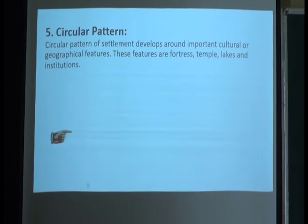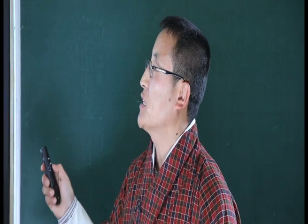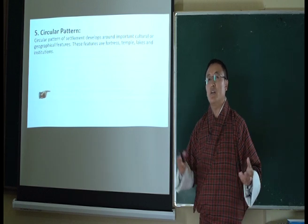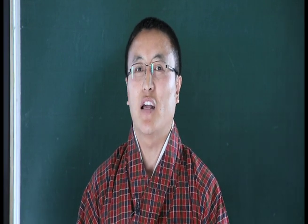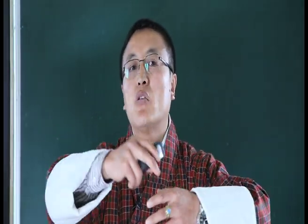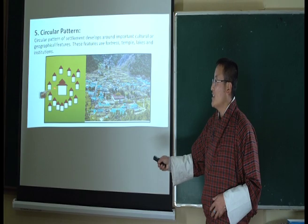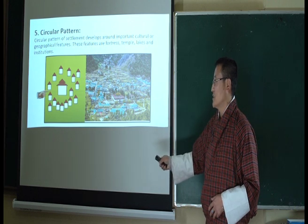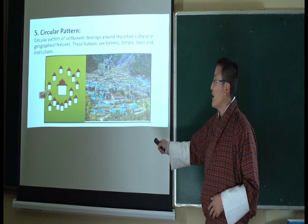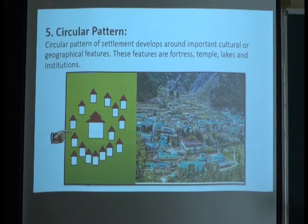The fifth and final pattern is circular settlement, which develops around important cultural or geographical features such as temples, monasteries, fortresses, hospitals, or schools. For example, in one picture there is a temple with all settlements developed around it. Similarly, Ha Dzong in Bhutan shows settlements forming around it. When settlements develop around an institution, monastery, or temple, we term that a circular pattern of settlement.